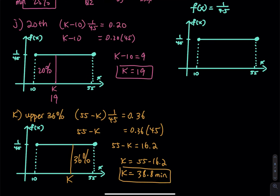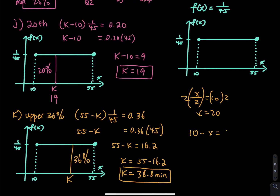That means the probability that a student finishes lunch between 38.8 and 55 minutes is 36%. If you get stuck solving an equation — for example, x divided by 2 equals 10, you multiply both sides by 2 to get x equals 20. Or if 10 minus x equals 6, then x equals 10 minus 6, which is 4. Don't let the numbers scare you — use easier numbers to figure it out.